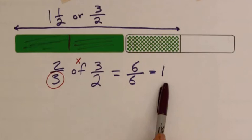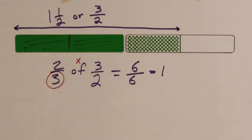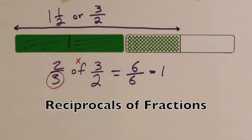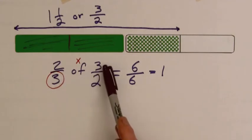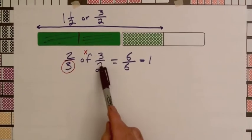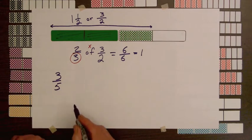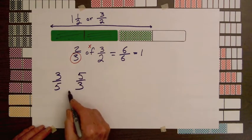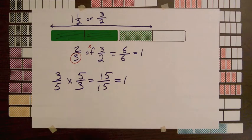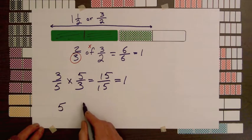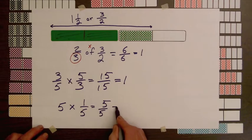Two numbers whose product is one are called reciprocals of each other. Two-thirds is the reciprocal of three-halves, and three-halves is the reciprocal of two-thirds. The reciprocal of any non-zero fraction can be found by interchanging the numerator and denominator. So the reciprocal of three-fifths is five over three, and the reciprocal of five is one over five, because five times one-fifth equals five over five, which is one.